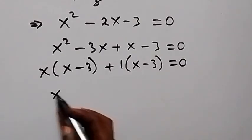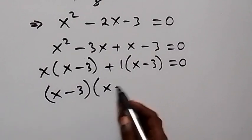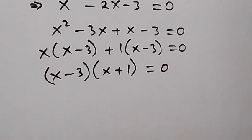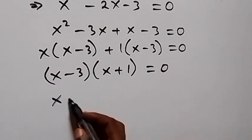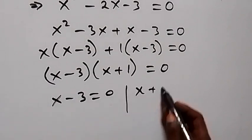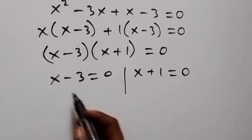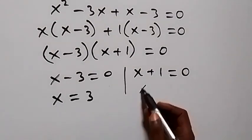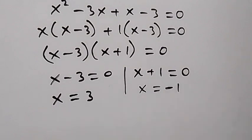Taking out the common factor (x minus 3), we get (x minus 3)(x plus 1) equals zero. Therefore, either x minus 3 equals zero, giving x equals 3, or x plus 1 equals zero, giving x equals minus 1.